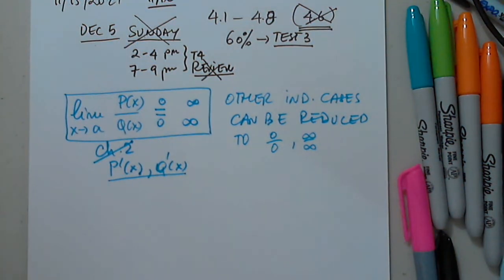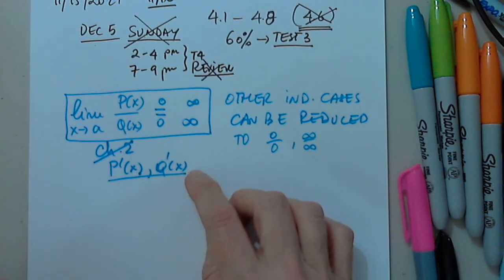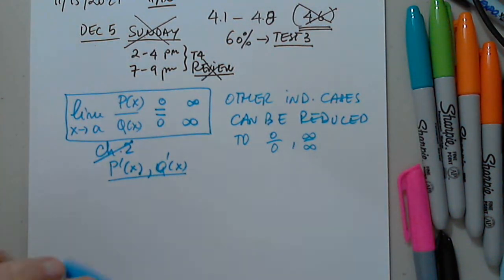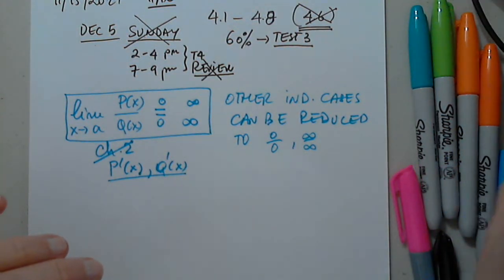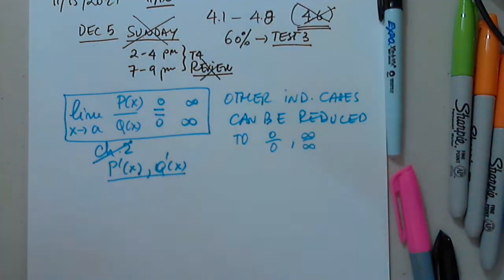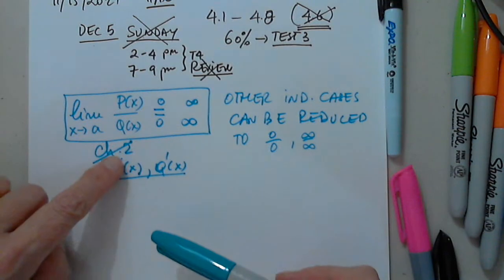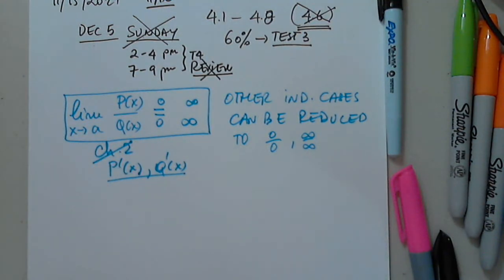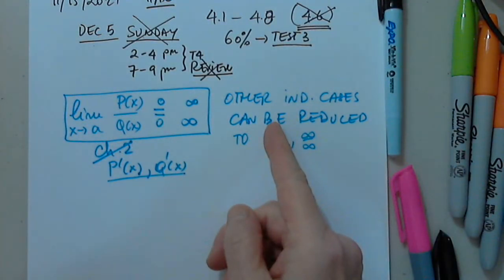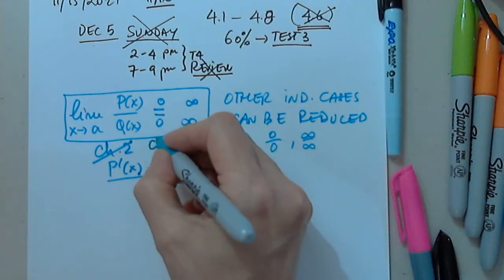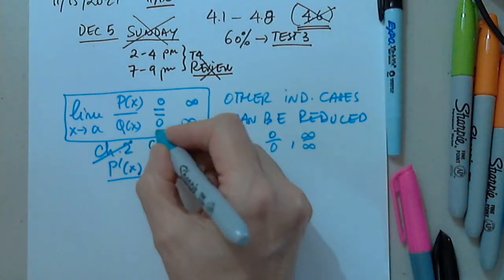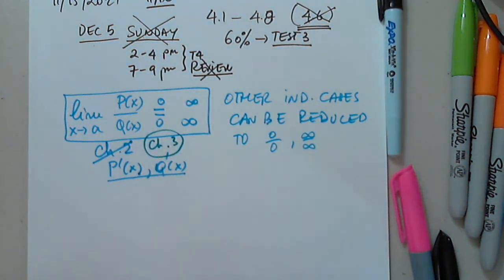Good, very good question. We introduced L'Hôpital's rule in chapter three, way before it appeared in chapter four, because it was a very useful method. I didn't wait until chapter four.